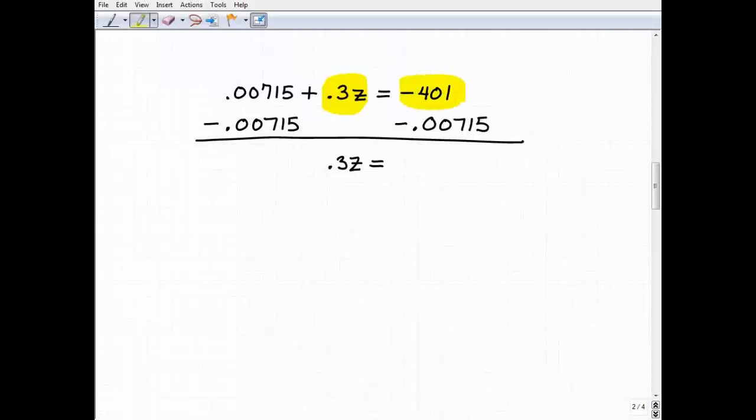All right. So when I subtract this negative 0.00715 from both sides, I'm going to get 0.3z equals. So now in my calculator, I'm going to have to go negative 401 plus a negative 0.00715. Now if you don't want to deal with the negative signs in your calculator, you could just simply add these up and keep the negative sign. So as long as you understand your positive negative number rules, then you're going to be fine. So 401 plus 0.00715 equals negative 401.00715.